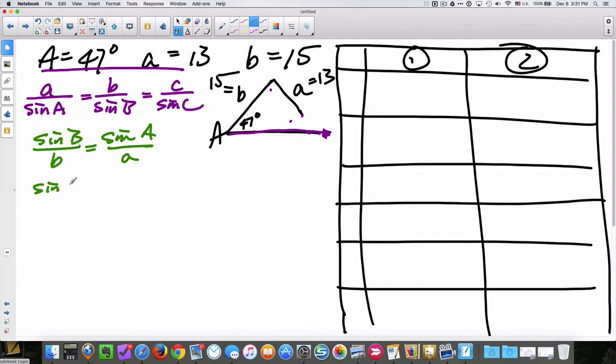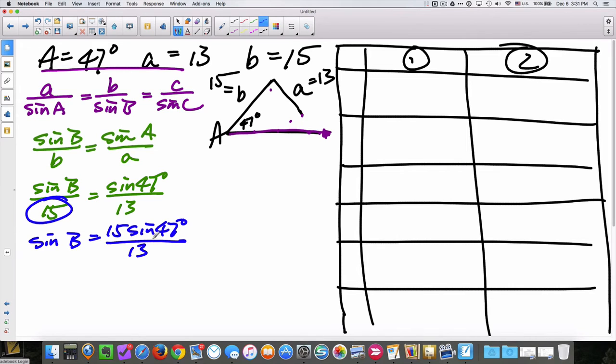Sine of b divided by lowercase b is equal to the sine of a divided by the lowercase a. Sine of angle b is what I'm looking for. Lowercase b is 15, sine of angle A is 47 degrees, and lowercase a is 13. I'm going to now multiply both sides by 15, so I'll get sine of angle B is equal to 15 times the sine of 47 degrees, and that's going to be all divided by 13. In my calculator, making sure that I'm in degree mode, I will type in 15 times sine 47, close parentheses, enter, divide it by 13. And I get sine of b is equal to 0.84386 96557.